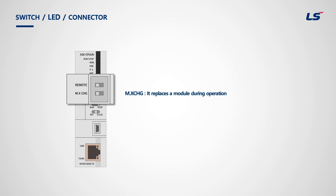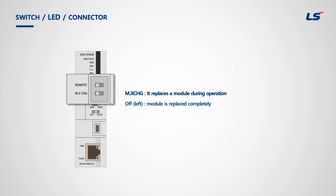The Module Exchange switch is used to replace a module during PLC run mode. When it's moved to the right, users can replace a module without stopping the PLC. However, users need to move it back to the left side when the replacement is completed.